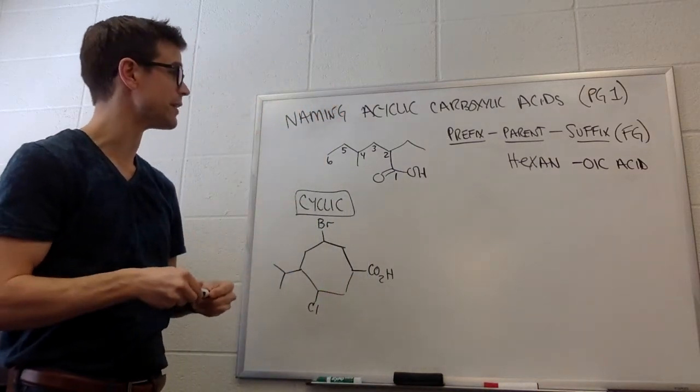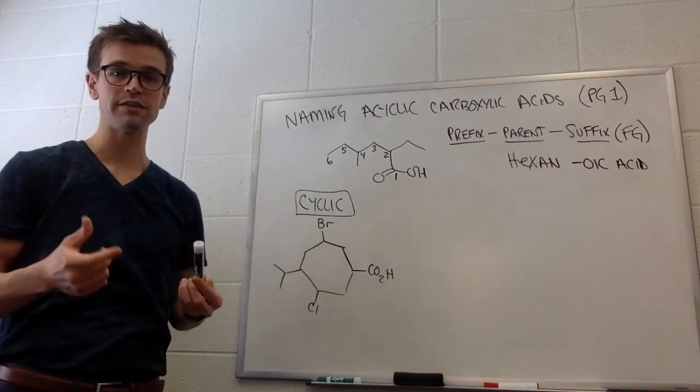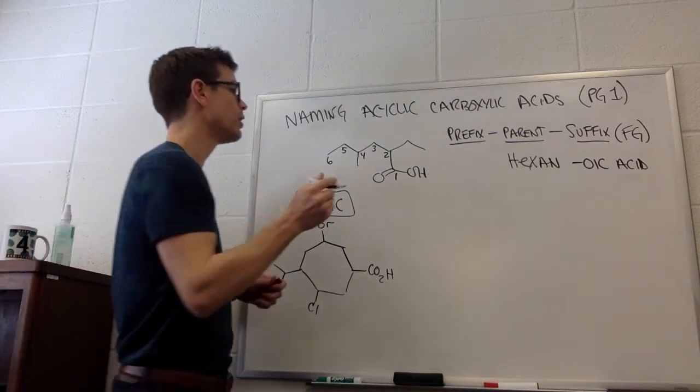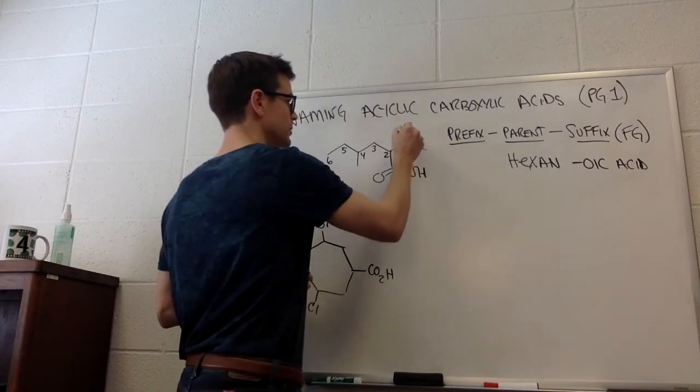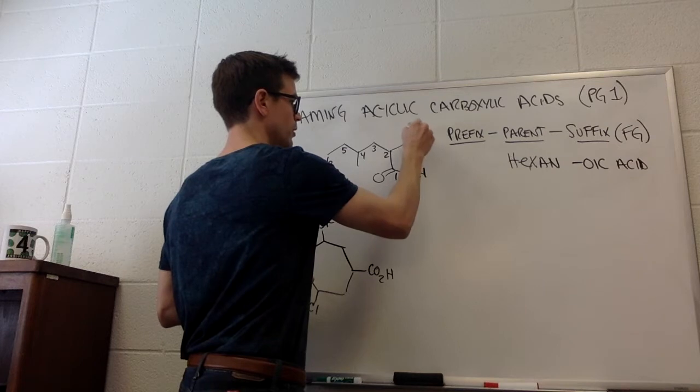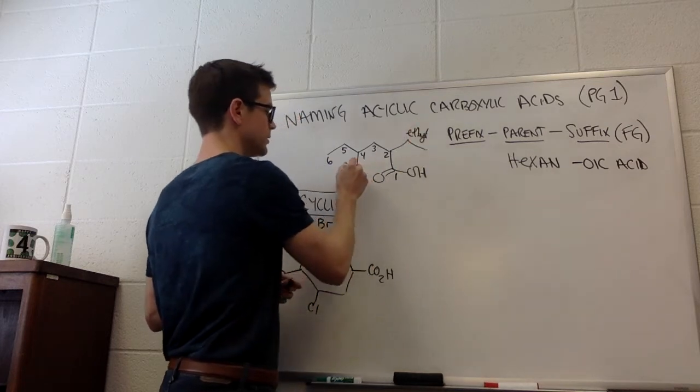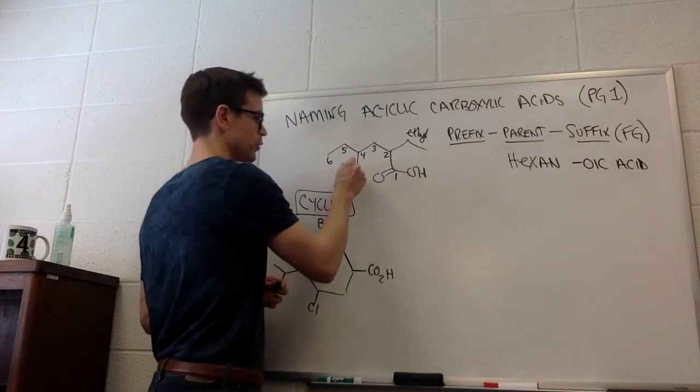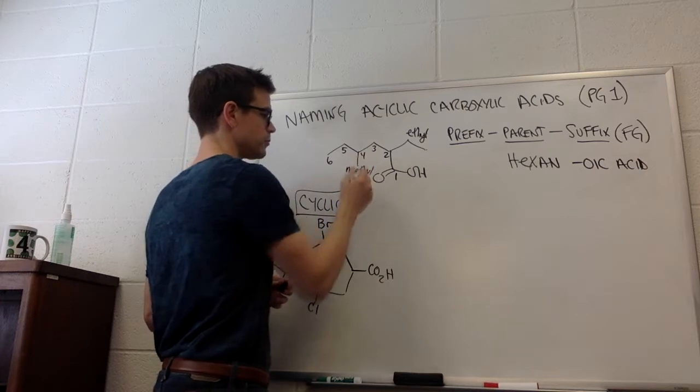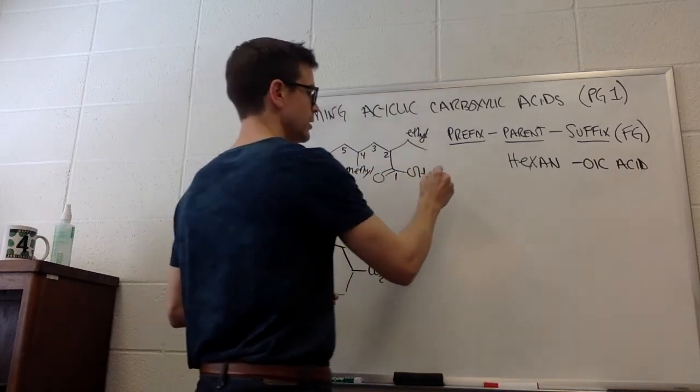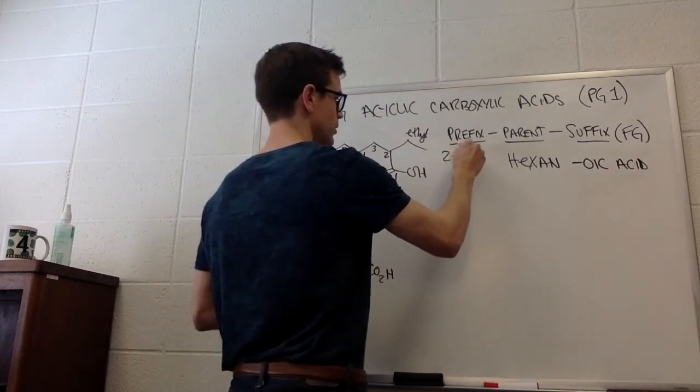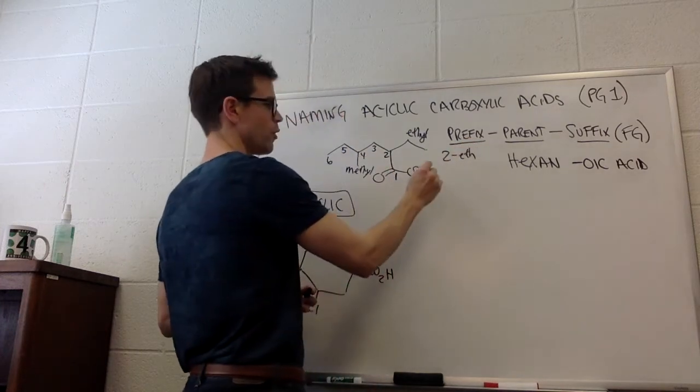What do we have left? We have the prefix left. The prefix just tells us where the substituents are and what they are. This is a two carbon substituent, that's an ethyl group. This is a one carbon substituent, that's a methyl group.